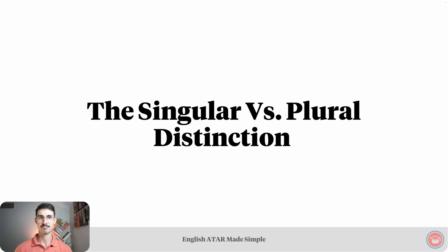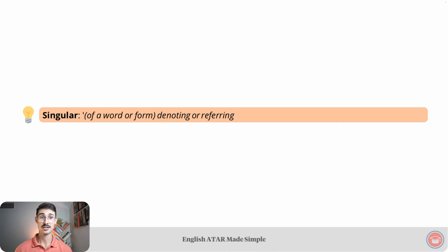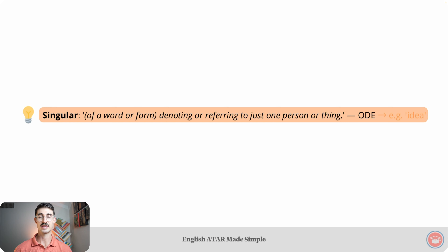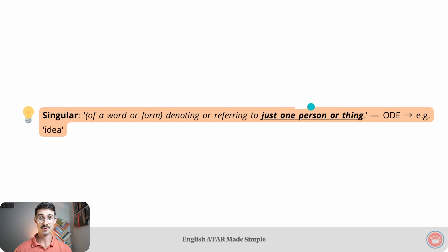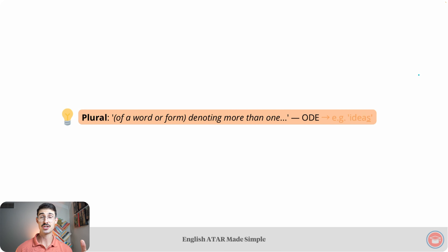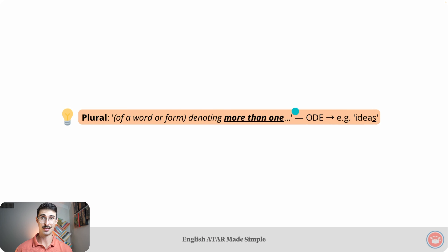The singular versus plural distinction. Let's start by defining the word singular. The Oxford Dictionary of English says: singular means, of a word or form, denoting or referring to just one person or thing. The main part of this definition is 'just one person or thing' — for instance, one idea. On the other hand, plural means of a word or form denoting more than one. The main part of that definition is 'more than one' — an example is 'ideas,' meaning more than one idea.